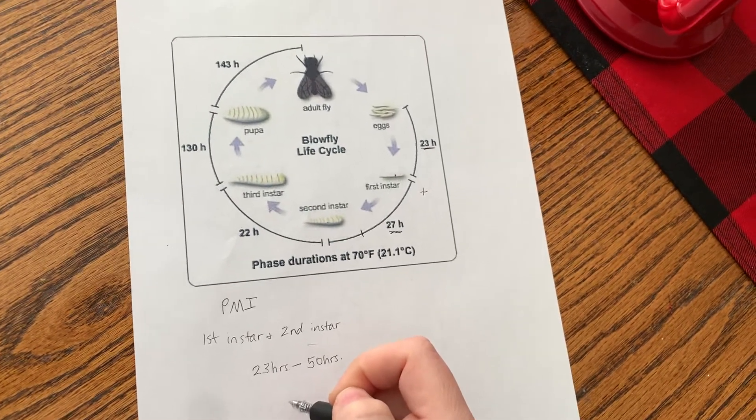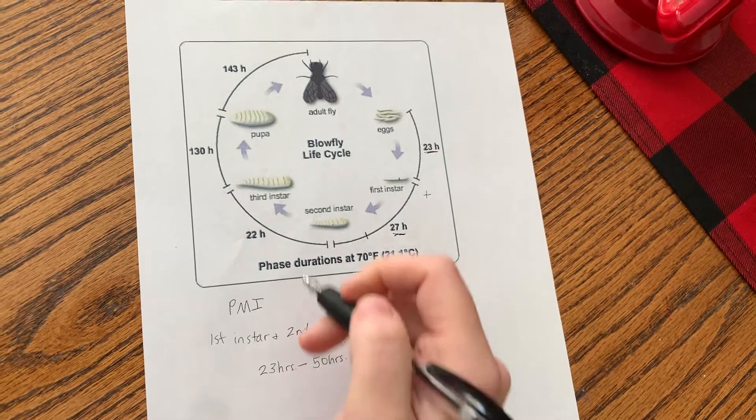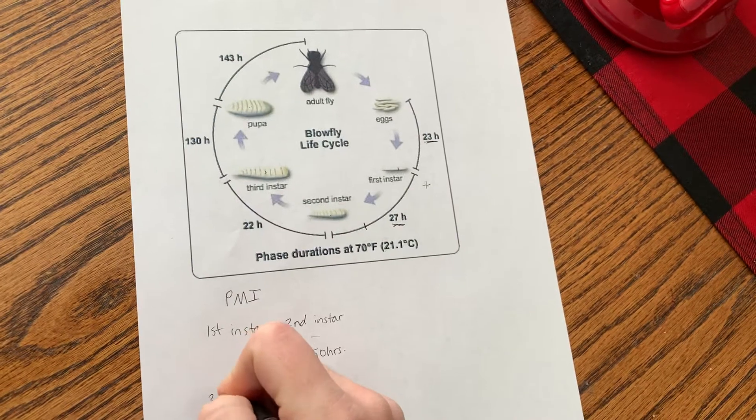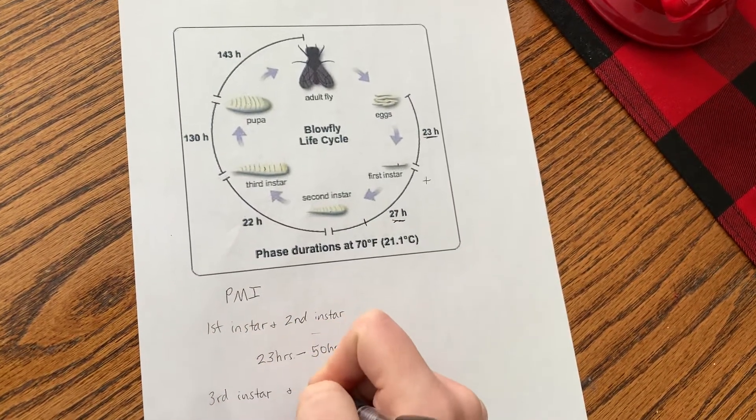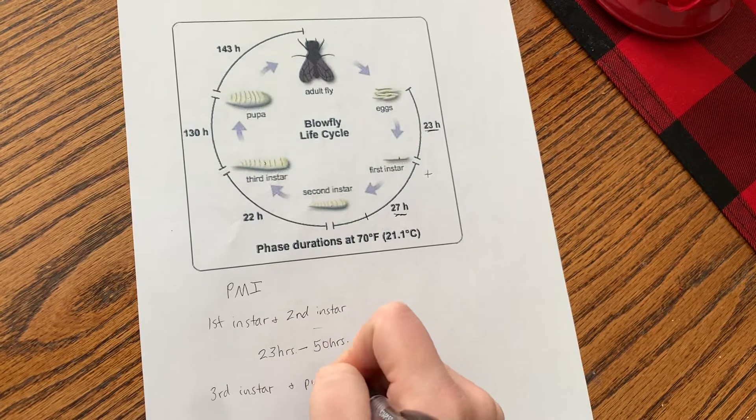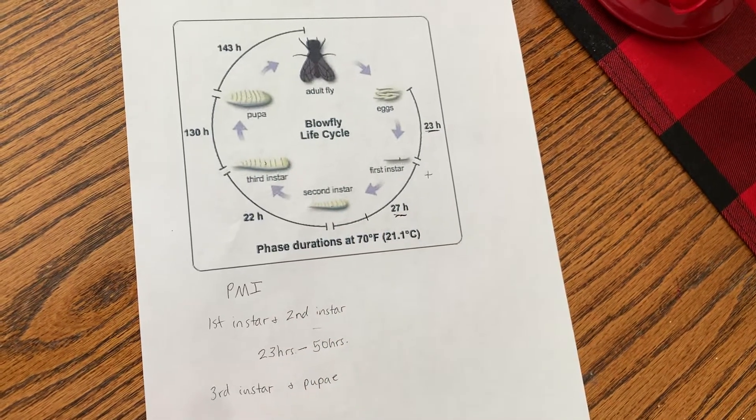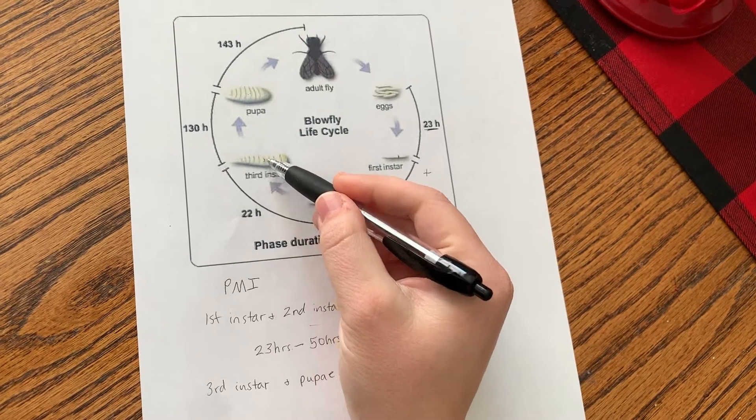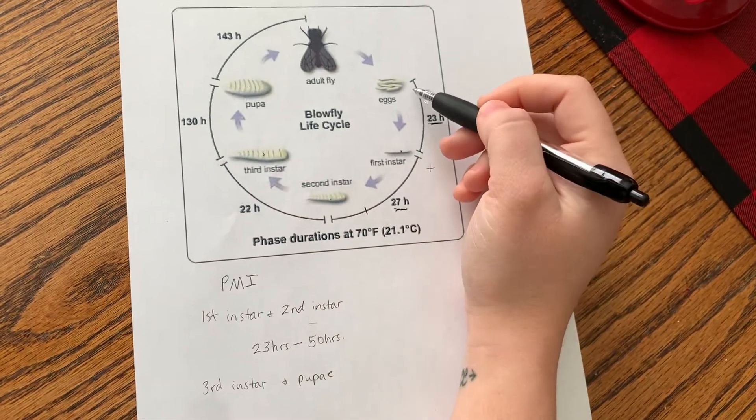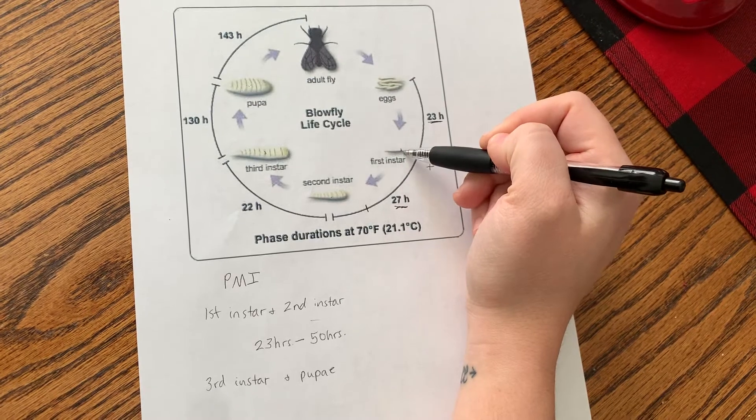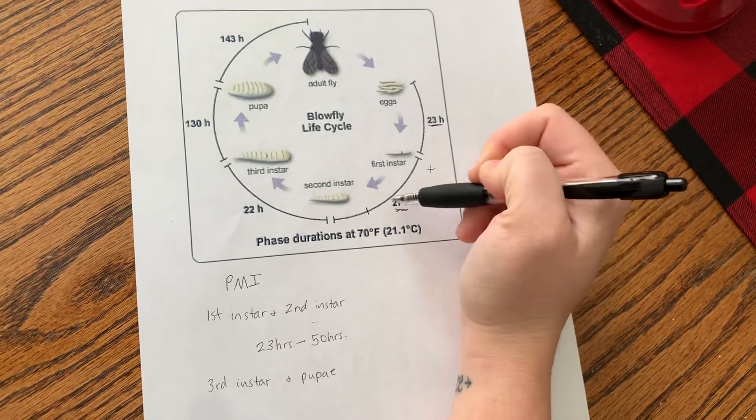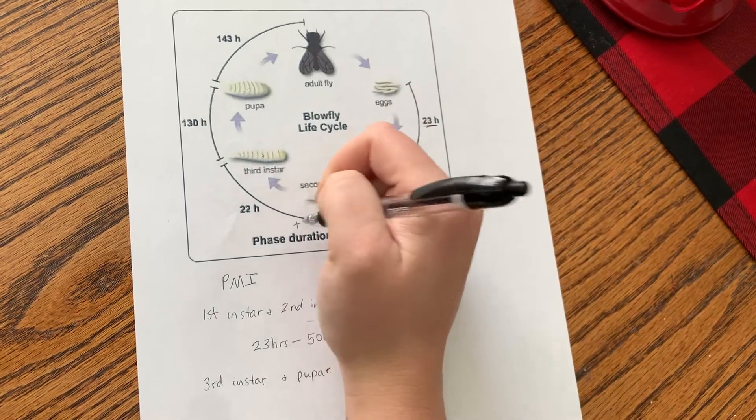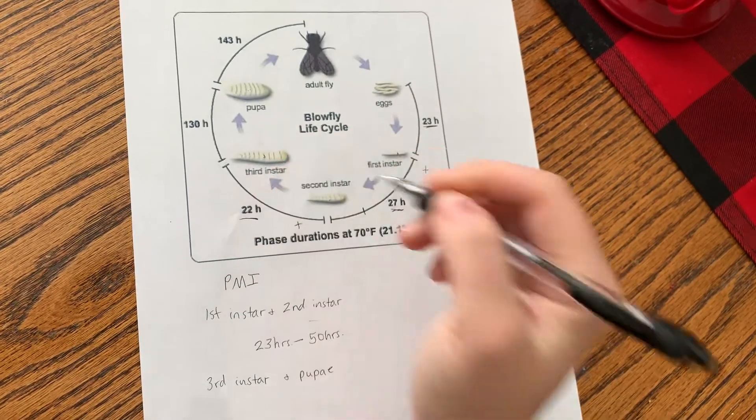Let's do another one. Let's say that you find third instar and pupae. So we're going to take the time that it took for the blowfly to develop to a third instar, which means that we have to add the egg to first instar stage plus the first instar to second instar stage plus the second instar to third instar stage.